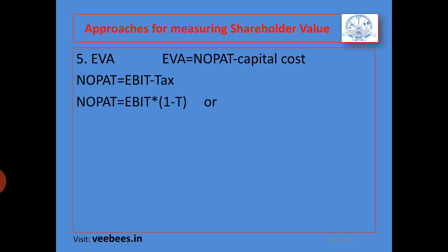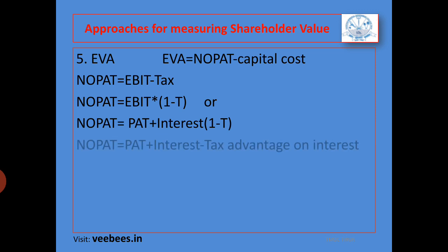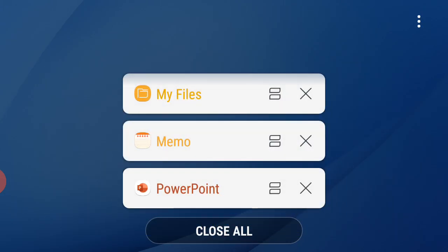NOPAT is equal to EBIT minus tax. EBIT means operating profit. So NOPAT is equal to EBIT into 1 minus T, which is EBIT minus tax — equivalently EBIT into 1 minus T. Or NOPAT is equal to PAT, profit after tax, and that equals PAT plus interest into 1 minus T, or PAT plus interest minus tax advantage. This covers the key equations.